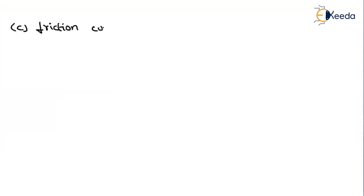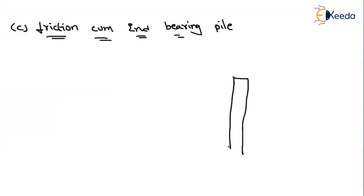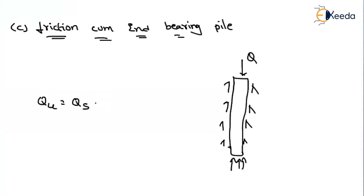The third type is friction come end bearing pile. In this case, whatever load is applied on the pile is resisted through both friction and end bearing. So the ultimate bearing capacity is found by the summation of frictional resistance Qs plus end bearing resistance Qb. In problems, they will mention clearly whether it is a friction pile, end bearing pile, or friction come end bearing pile, and depending on the category, we find the ultimate bearing capacity.